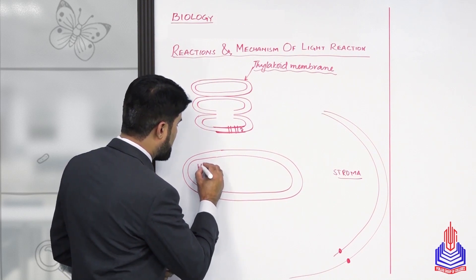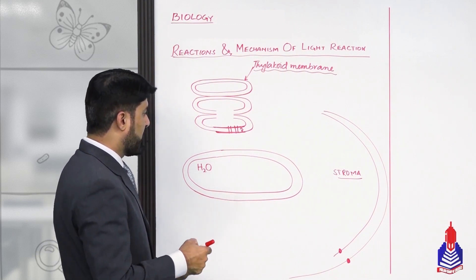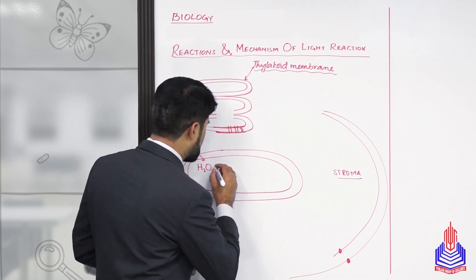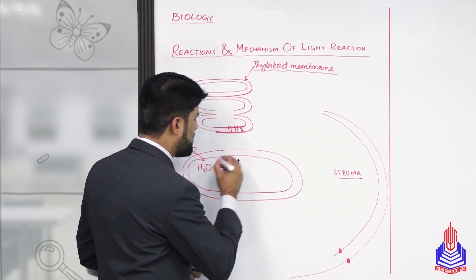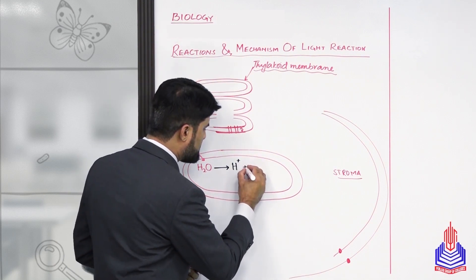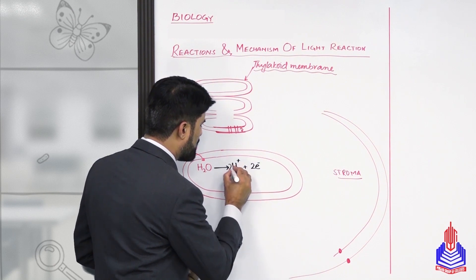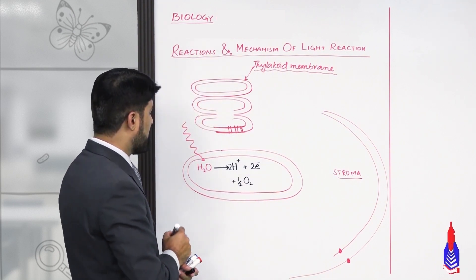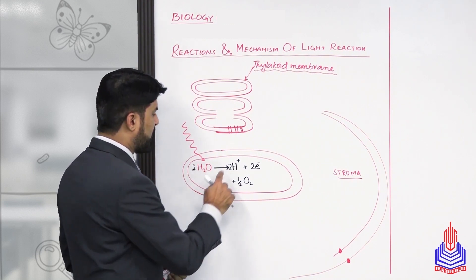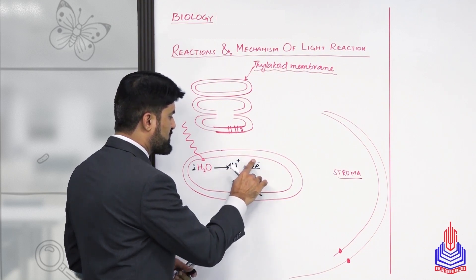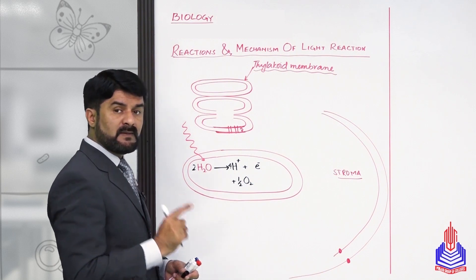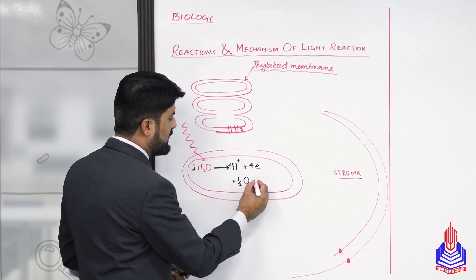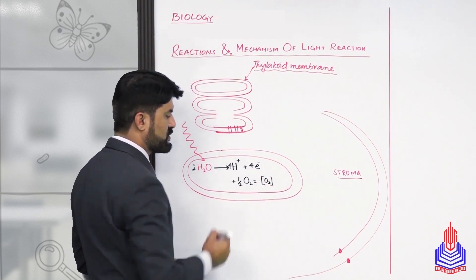The granum is a single-membrane structure. I am talking about the two surfaces of that single membrane — one outer and one inner. On the inner surface, we carry out photolysis of water. When sunlight falls on this inner surface, the breakdown of water produces three things: H⁺ (protons), electrons, and half O₂. If two water molecules are broken, we get four protons, four electrons, and one complete O₂ molecule.